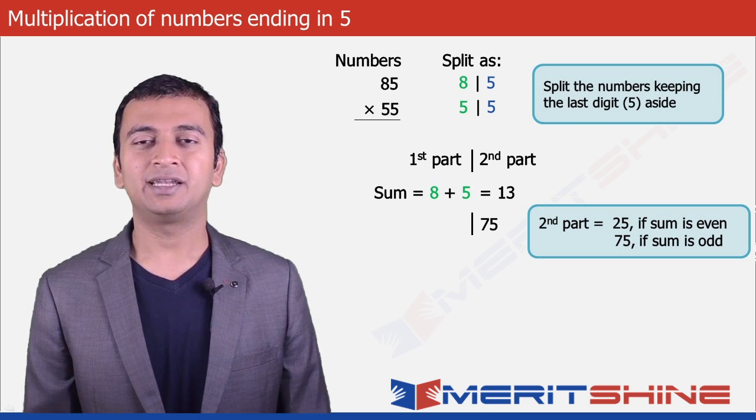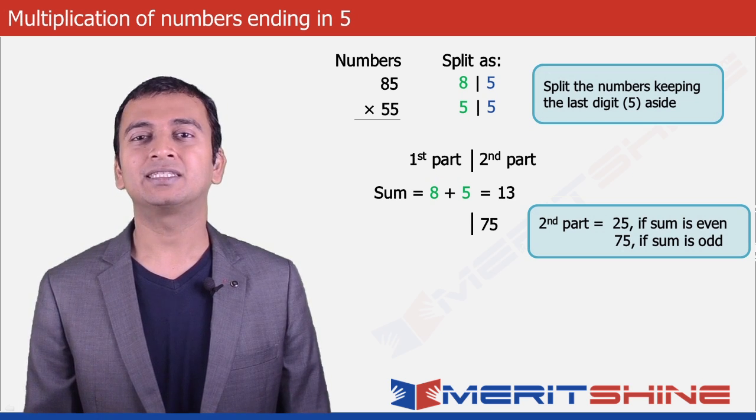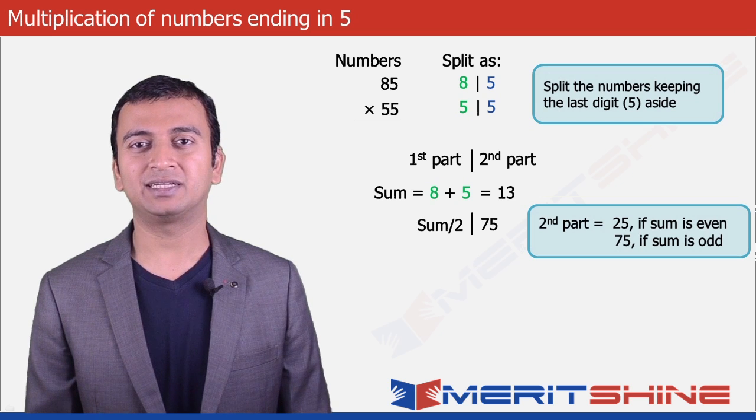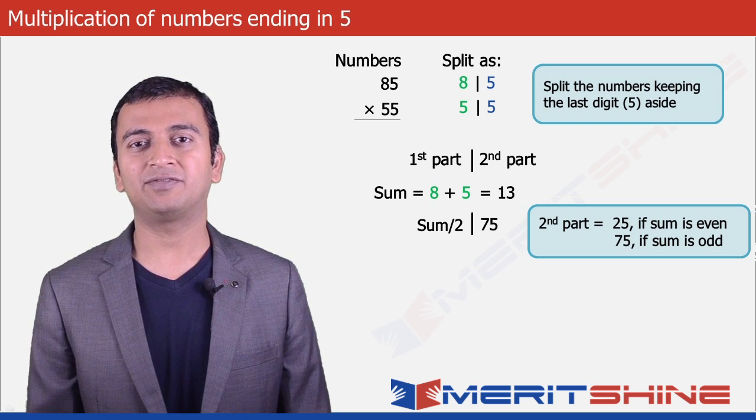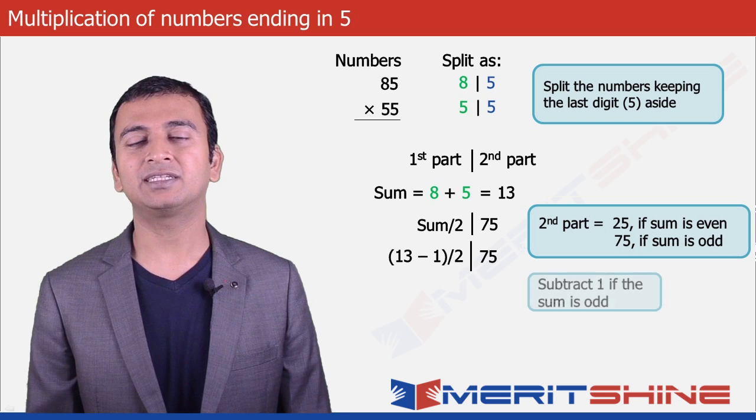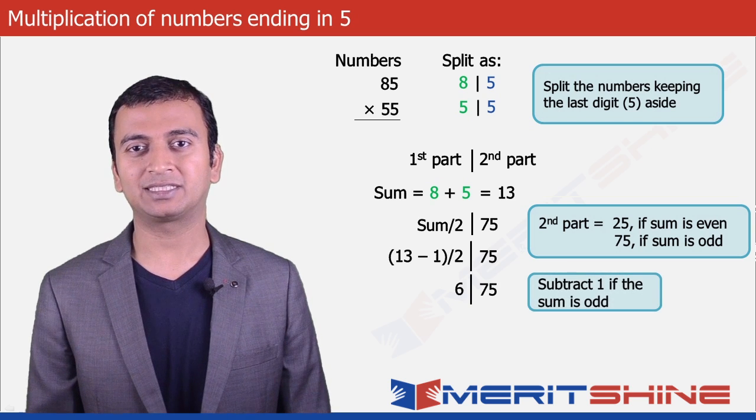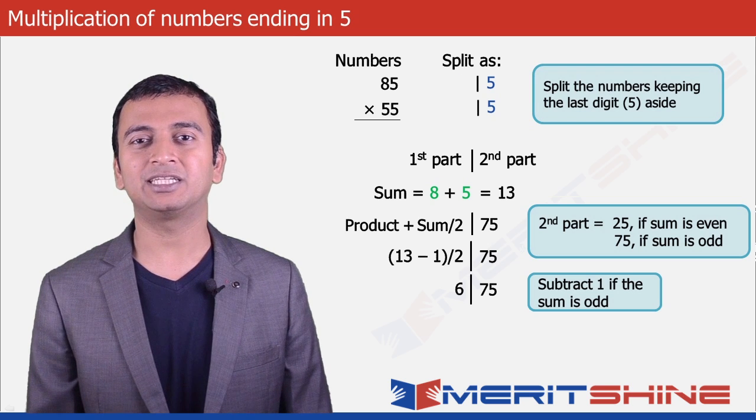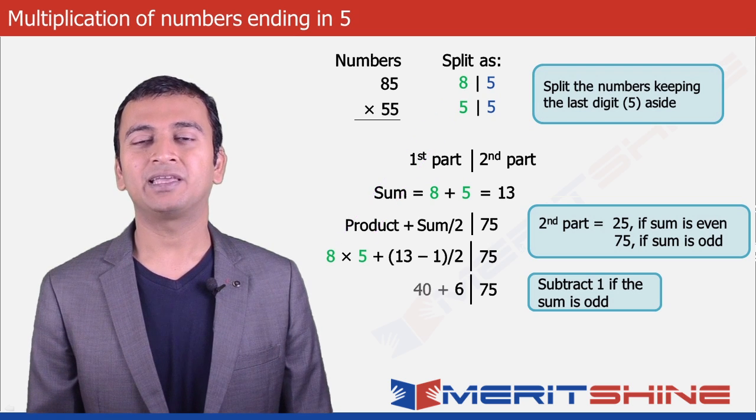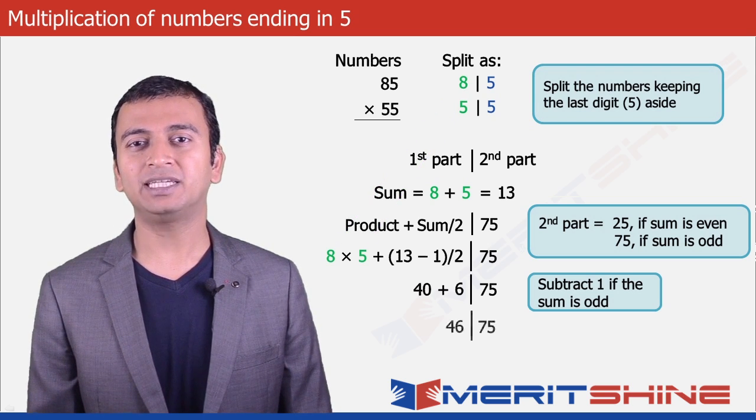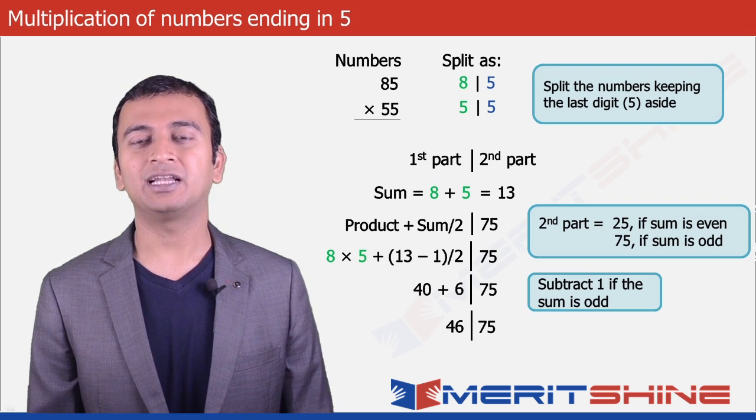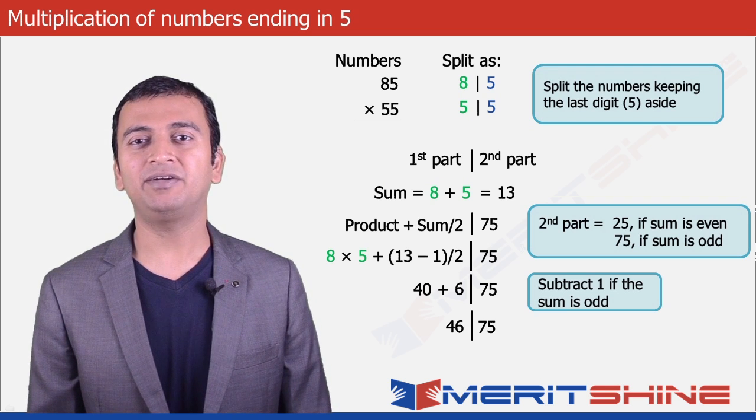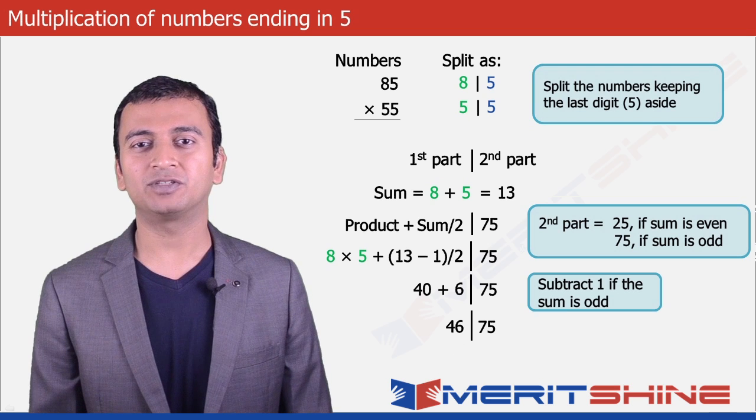Now for the first part, the sum obtained 8 plus 5, 13 will have to subtract 1 and divide it by 2 giving us 13 minus 1 by 2, 6. To this, we will also have to add the product of the numbers which is 8 × 5, 40 giving us total of 40 plus 6, 46. Now we can club these two parts and write down our final answer which would be 4675.